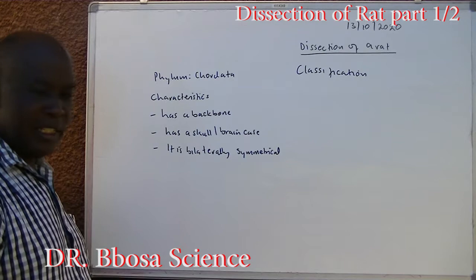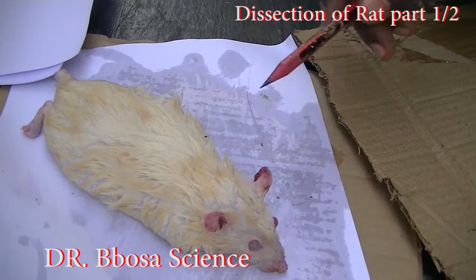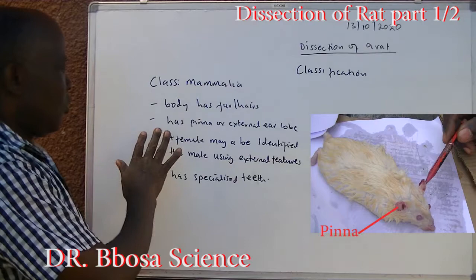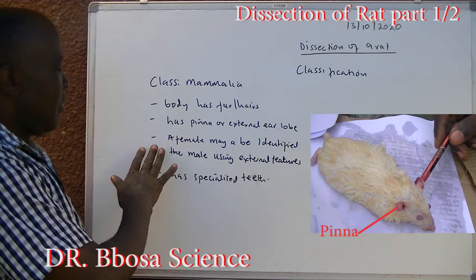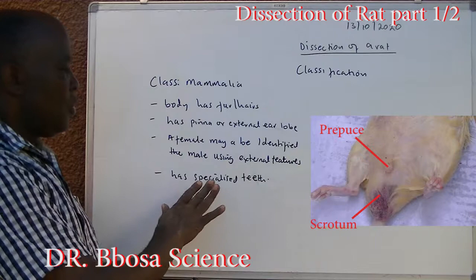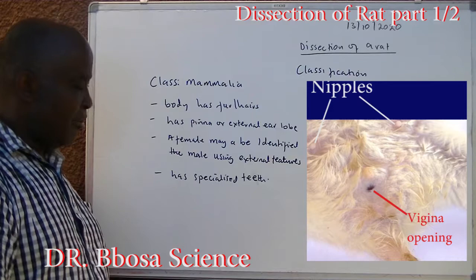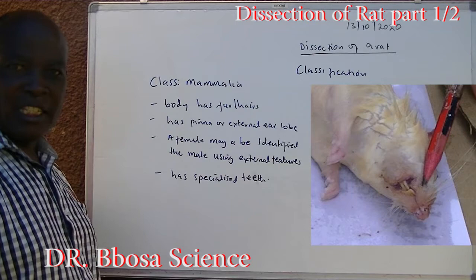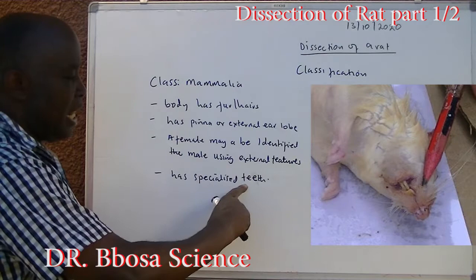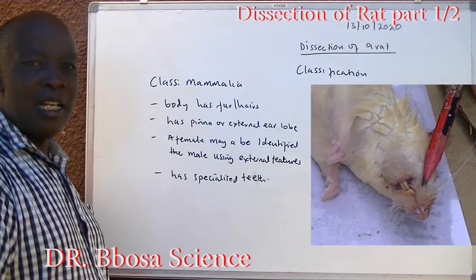Class Mammalia characteristics: one, the body is covered with fur or hair. Two, it has a pinna or external earlobe. Three, a female may be identified from the male using external features — a scrotal sac and a penis in the male; a vaginal opening and teats in the female. If more than three characteristics are required, you can add that it has specialized teeth, which can be seen by opening the mouth. Otherwise somebody may consider the teeth as internal structures.